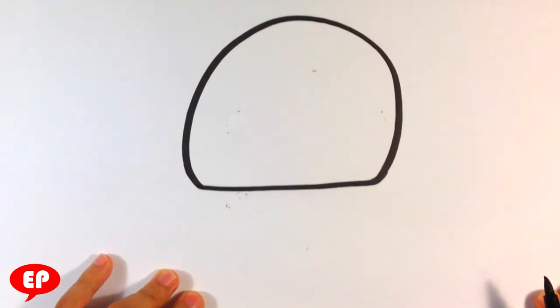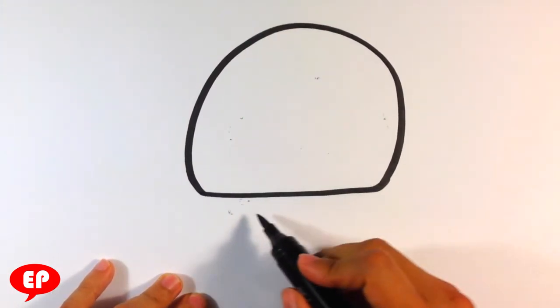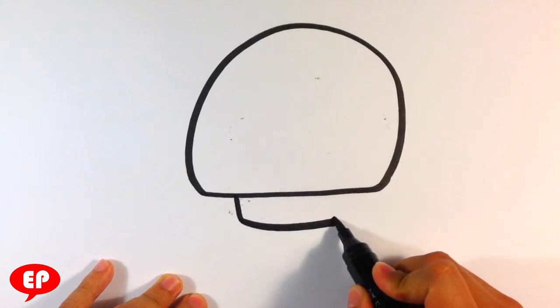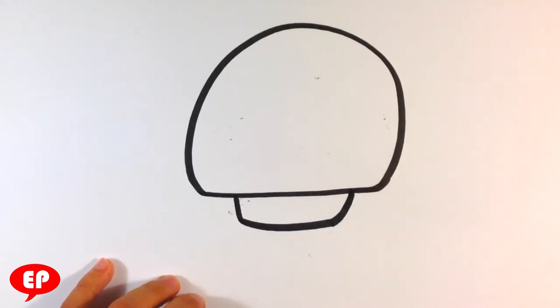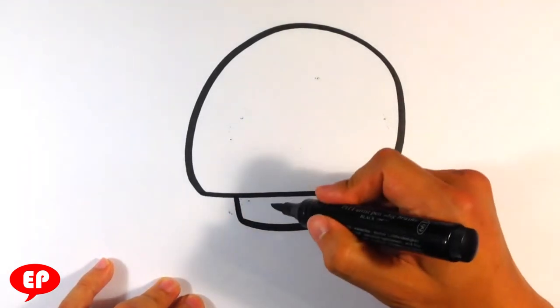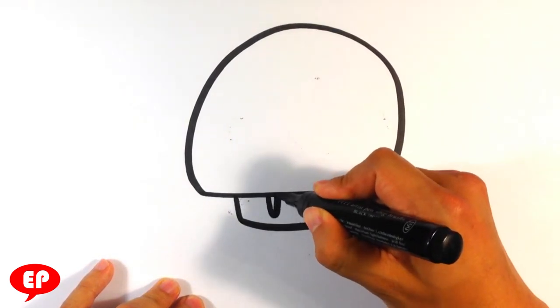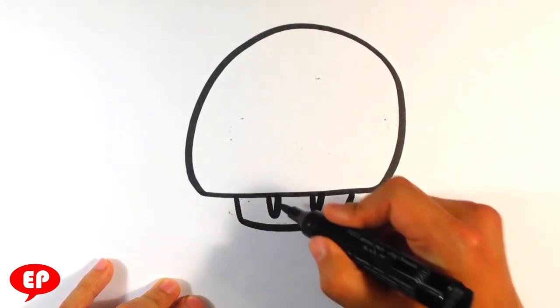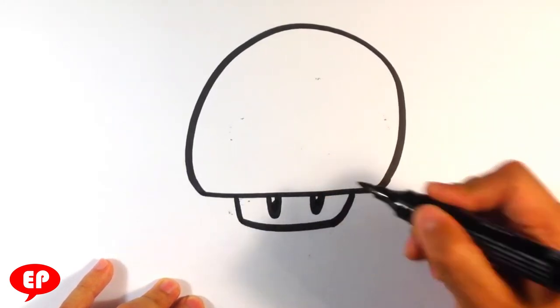That semi-circle above the top of the mushroom there. This almost cupcake-looking shape. Bottom here. This U-shape for the eyes. Really easy, right? Super easy shape.